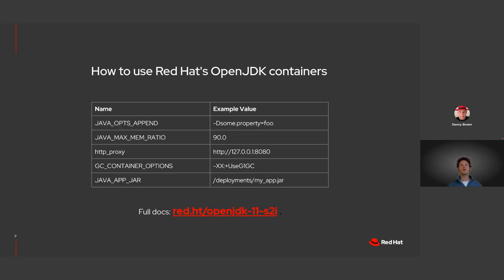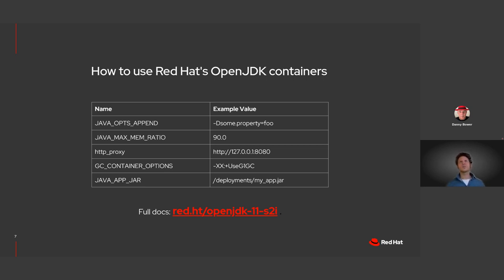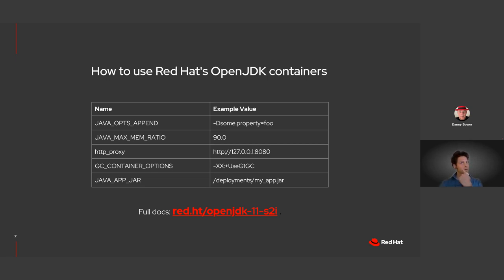So how do you tune our containers? There are many environment variables you can set which affect build time or runtime. For example, we'll show the JavaOptsAppend environment variable in a demo later, which is useful to set additional properties for your application. If you want to switch your garbage collector, then GC_CONTAINER_OPTIONS is a useful environment variable for our containers. Full documentation is linked here for JDK 11, with JDK 17 documentation forthcoming and very similar.